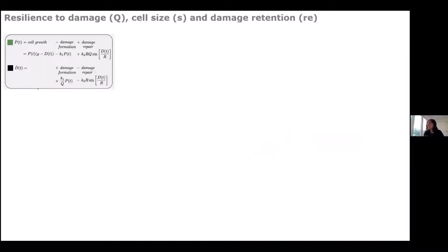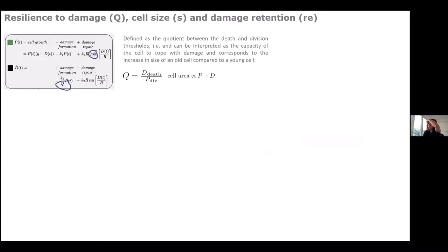The single-cell model has three main components. The first is the parameter Q — resilience to damage. When building the model using non-dimensionalization (a technique from physics to remove units and normalize), certain properties emerge. Q is the quotient between the cell death threshold and the division threshold — essentially the amount of protein present at death divided by the amount that allows division. It can be interpreted as the capacity of the cell to cope with damage.